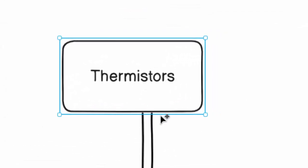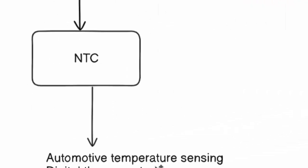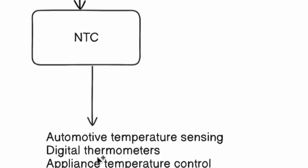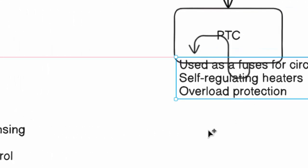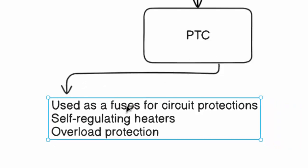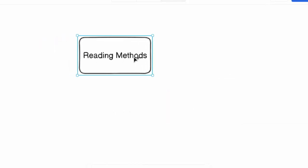Thermistors are usually of two types: NTC and PTC. NTC means negative temperature coefficient, which decreases resistance as temperature increases. PTC is positive temperature coefficient, which increases resistance as temperature increases. NTC is widely used in temperature sensing applications - digital thermometers, appliances, temperature control, and automotive sensing. PTC thermistors are used as fuses for circuit protection, self-regulating heaters, and overload protection.